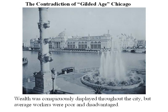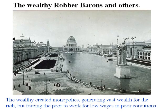But the wealth displayed in the Gilded Age involved important contradictions. While wealth was conspicuously displayed throughout the city, ironically the average worker involved in creating this great collective art was likely a poor and disadvantaged person. During this time, the so-called robber barons ruled the Chicago economy, and many of these same wealthy patrons were involved in sponsoring the 1893 Chicago World's Fair. These robber barons created monopolies in important sectors of business, development, and trade, generating vast wealth for themselves while forcing the poor to work for low wages in poor conditions.